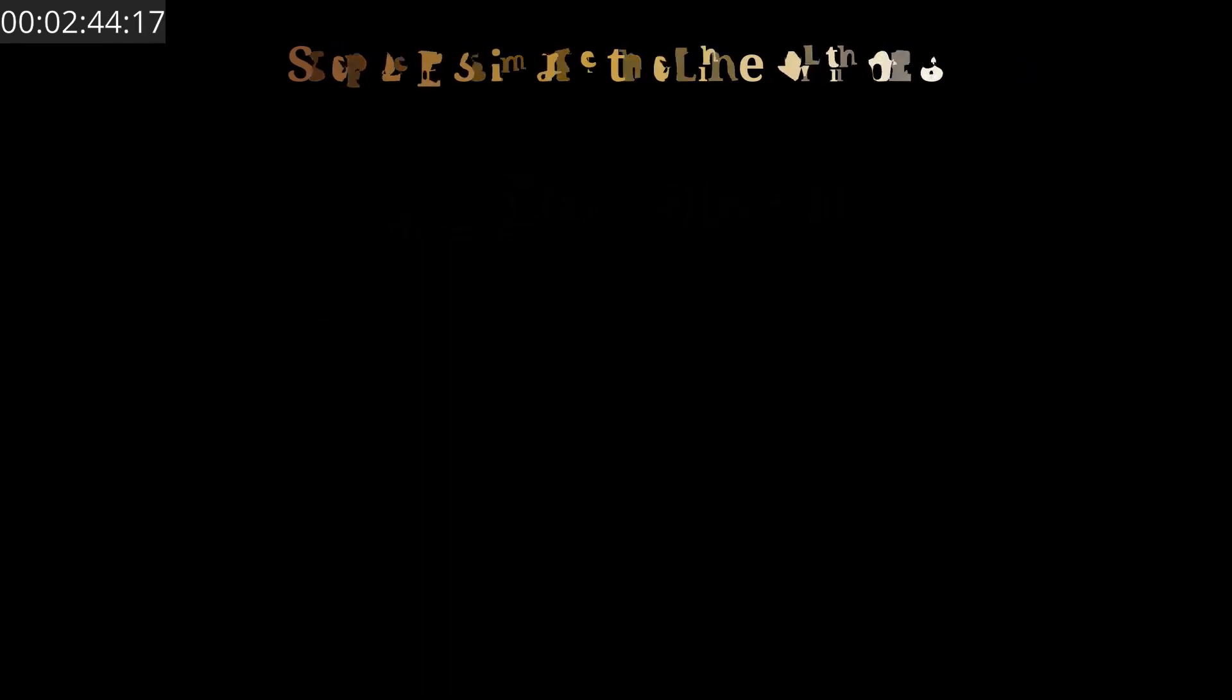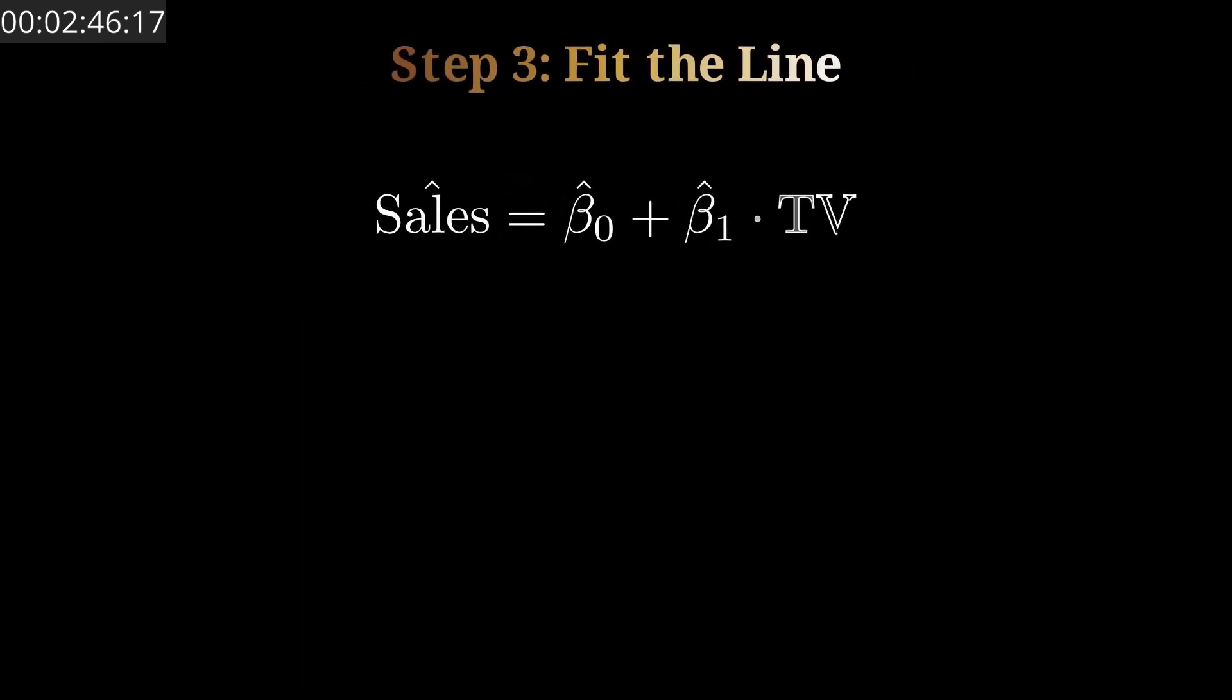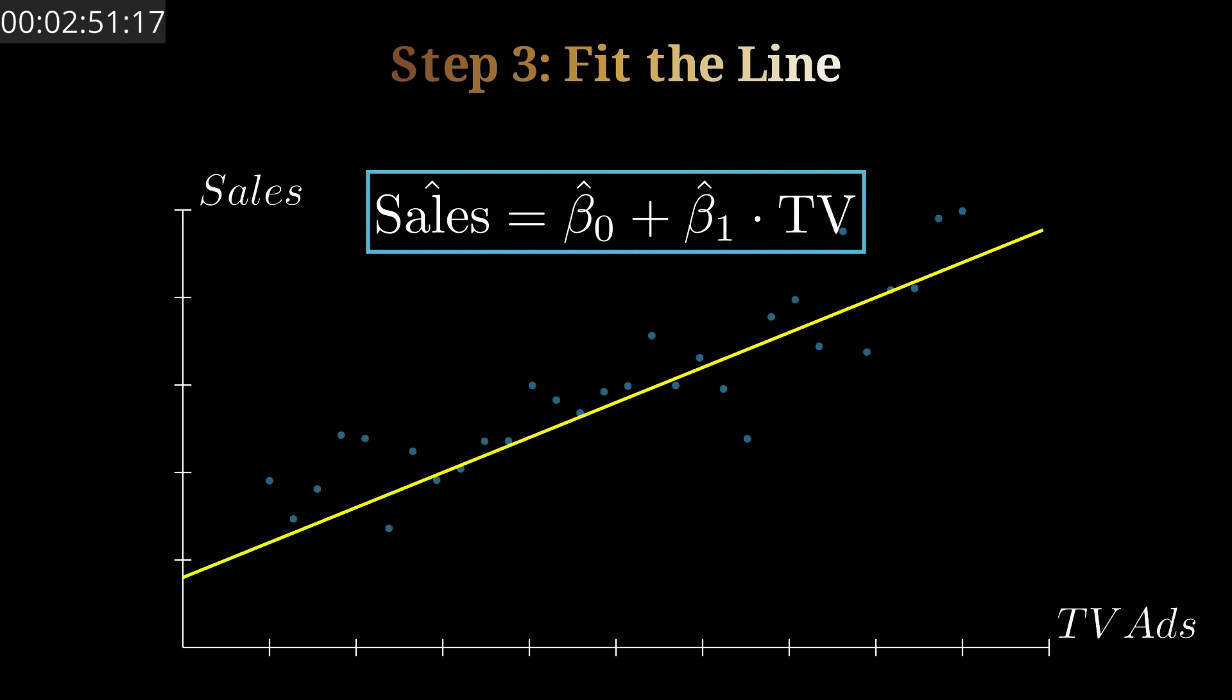And last, we plug those into the equation to get the fitted line. Sales hat represents the response that our model estimates. Once we've got all of that, we can use this line to predict future sales based on how much we plan to spend on TV ads. Pretty cool, right?